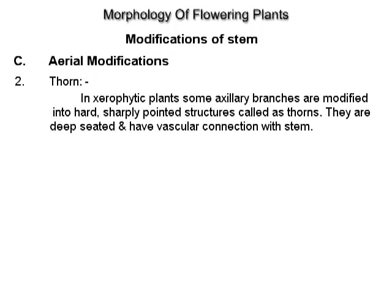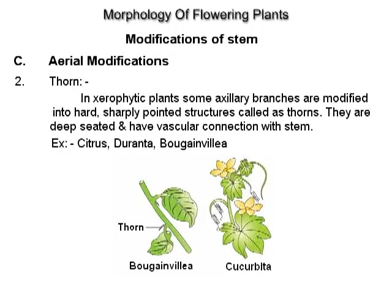Thorn. In xerophytic plants, some axillary branches are modified into hard, sharply pointed structures called thorns. They are deep-seated and have a vascular connection with the stem. Examples: Citrus, Duranta, Bougainvillea.